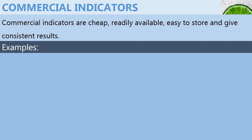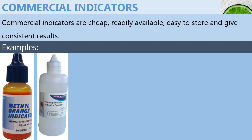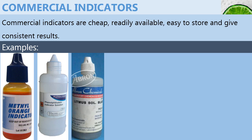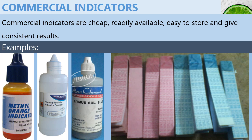Examples of these commercial indicators include methyl orange indicator — as you can see, a little bottle of methyl orange indicator. Then you have phenolphthalein indicator, litmus solution indicator, and finally litmus papers. We have red litmus papers and blue litmus papers.